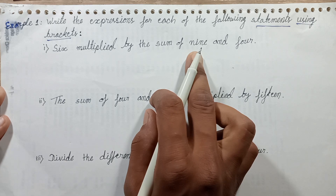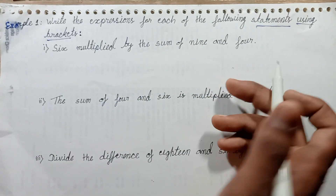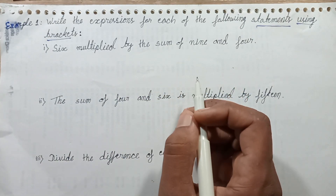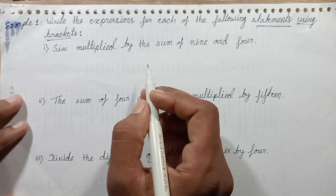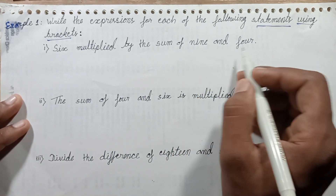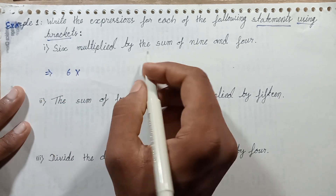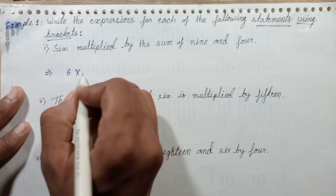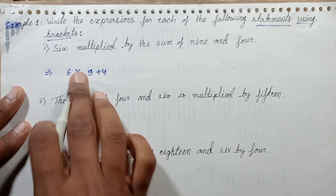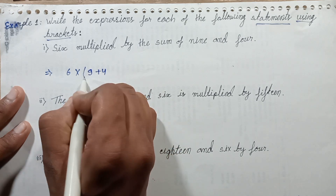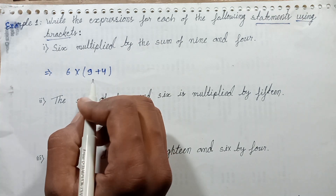This statement: write in digit form using brackets. Let's solve one by one. 6 multiplied by the sum of 9 and 4. The sum of 9 and 4 — these two digits are separated by curly bracket, separate by parentheses.